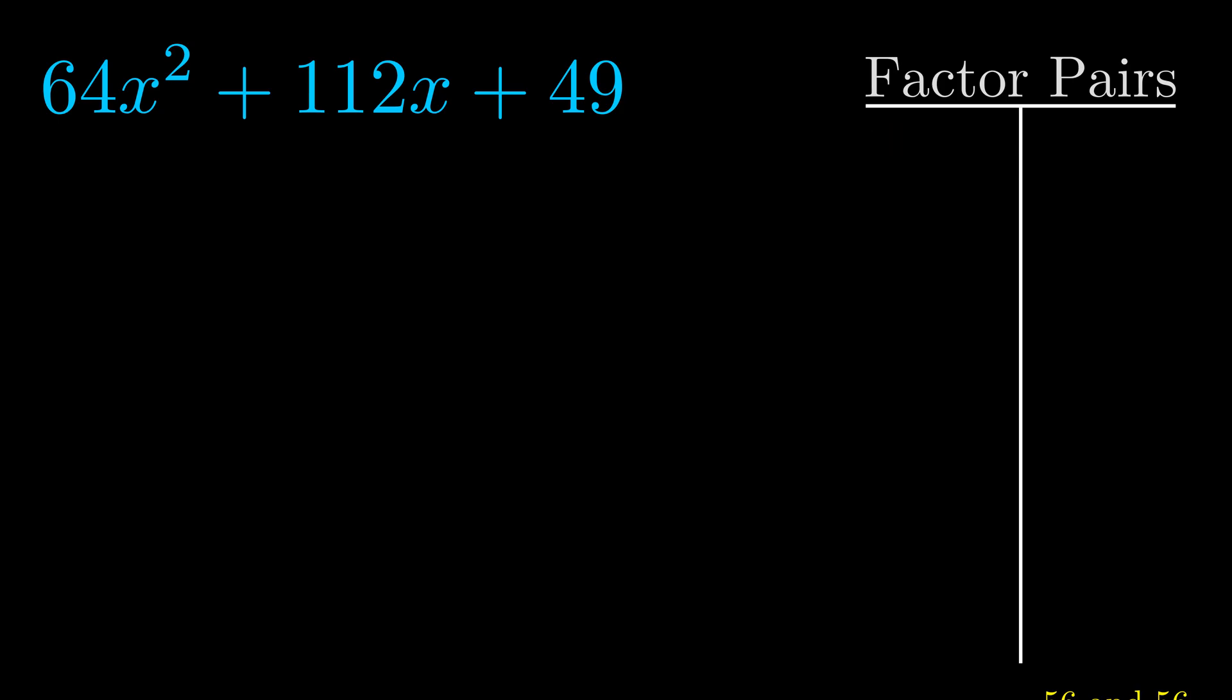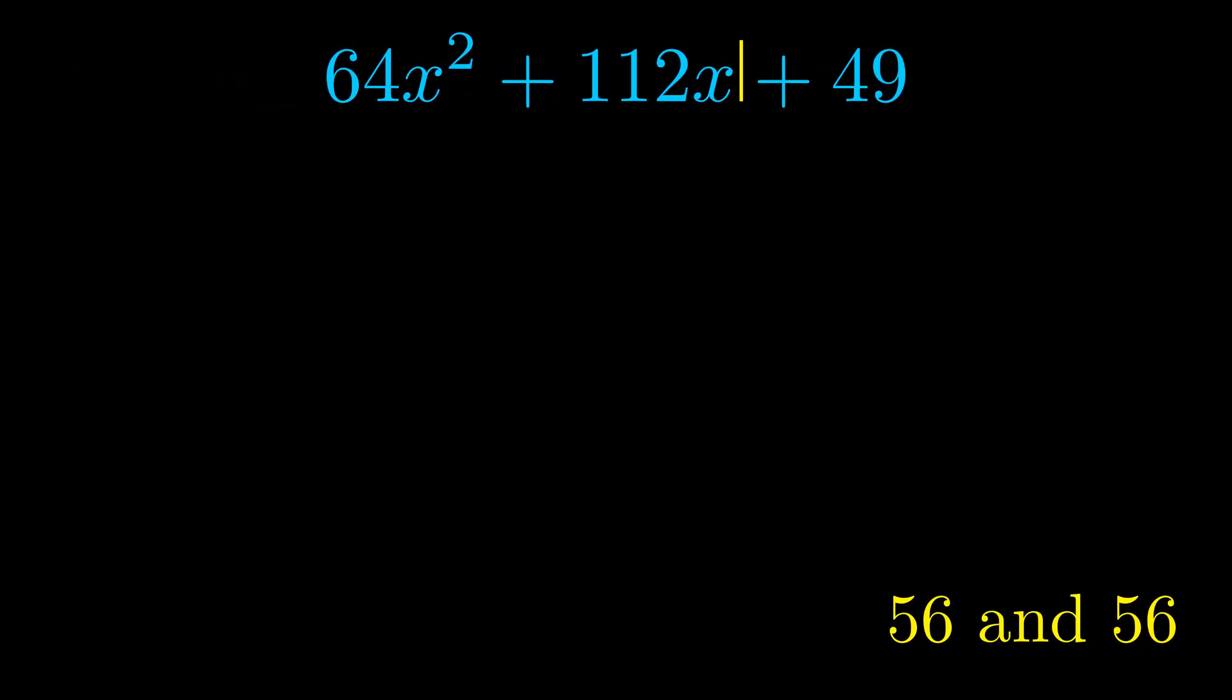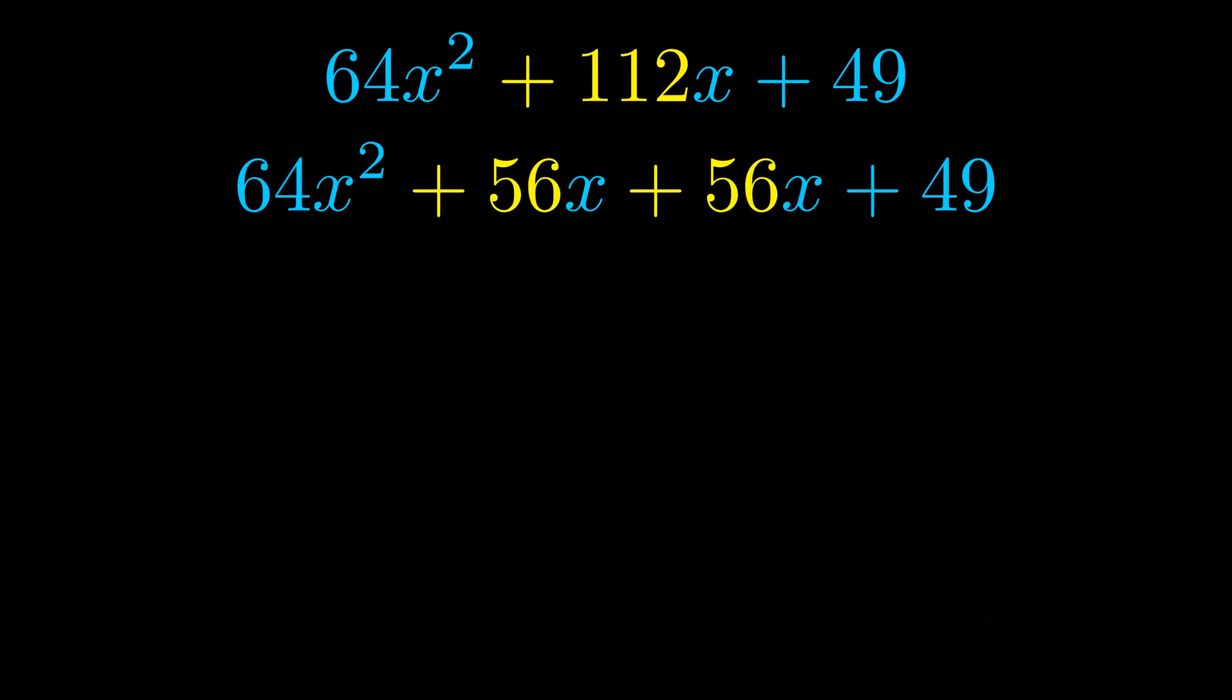Now once we have this factor pair what we want to do is use it to split up the b value. Notice how I'm going to keep my first term and my last term completely unchanged. It is only this b term highlighted in yellow that gets expanded into this correct factor pair.